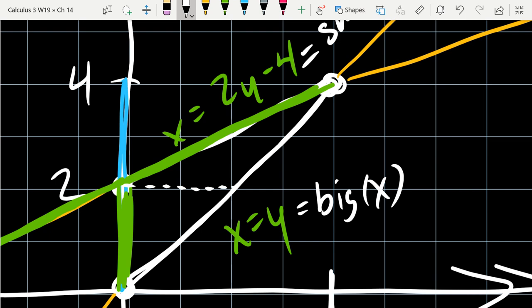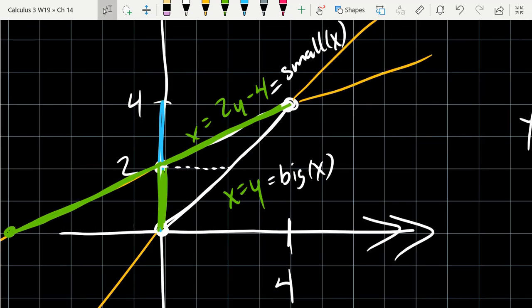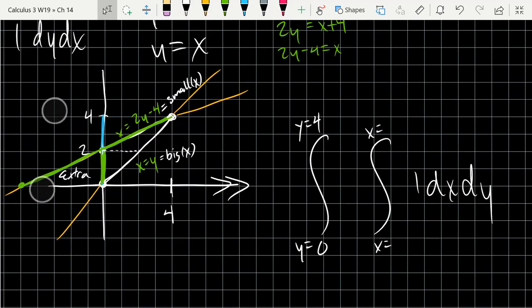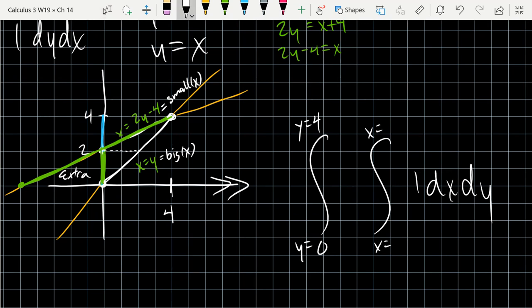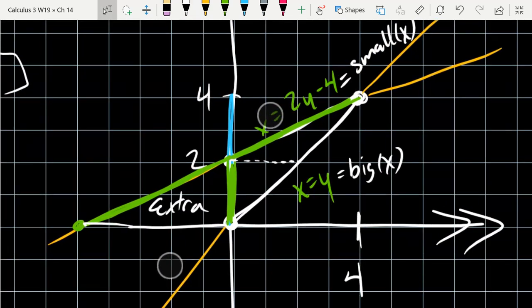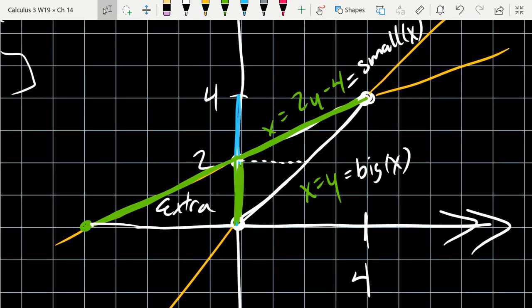Because the small function goes from the 2y minus 4 to x equals 0. And that's really important. I don't want to count this extra over here. If I just go ahead and compute this integral, I'm going to get the triangle with the extra part included. Because the small bound is the entire green line segment. The big bound is correct the entire time. It's the white line segment. The problem with the small bound, it needs to change right here.